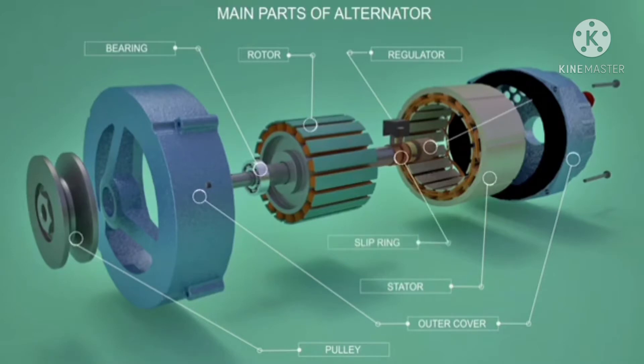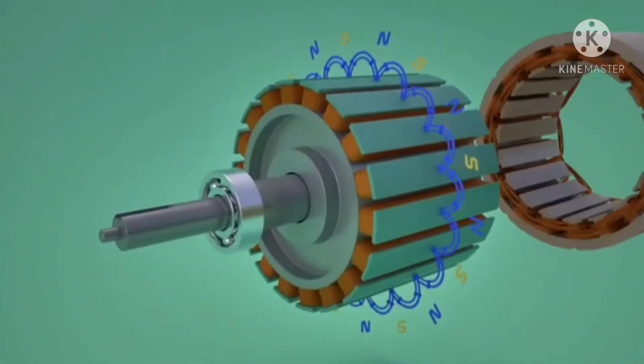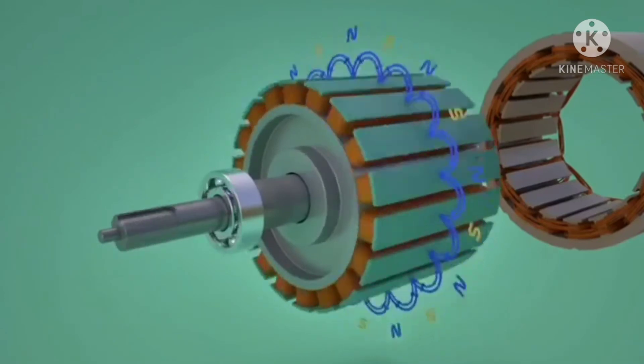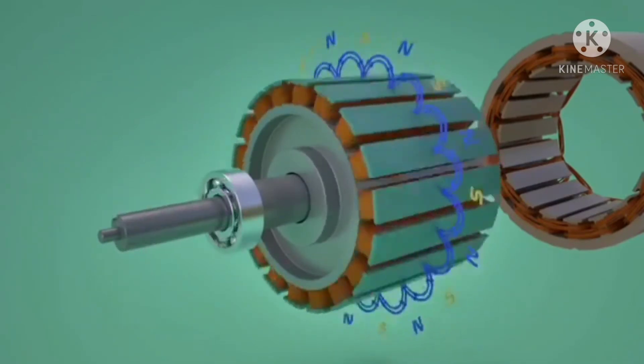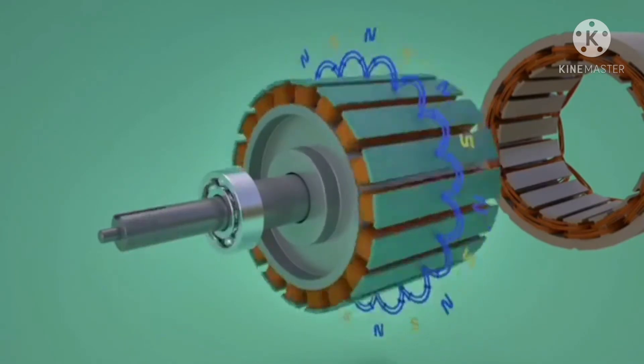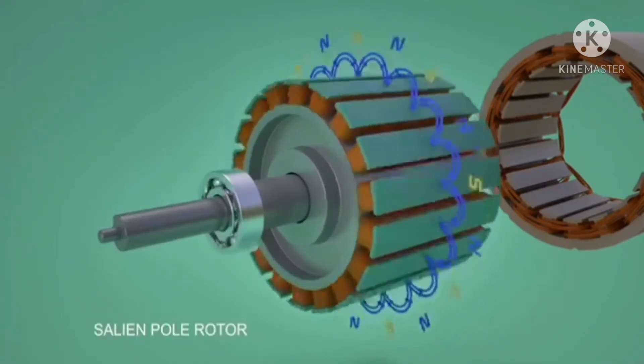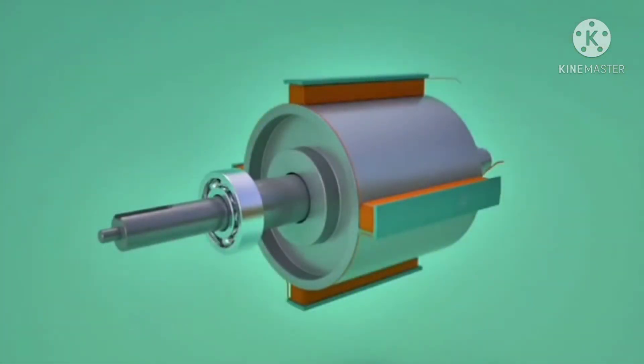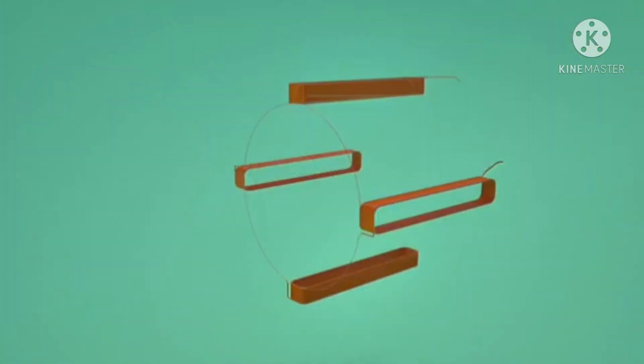The rotor produces a rotating magnetic field. Armature coils are stationary, and rotating magnetic flux associated with the rotor induces electricity in the armature coils. For better understanding, let's consider a rotor with just four poles.